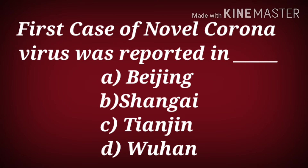The first case of novel coronavirus was reported in — was it in Beijing, Shanghai, Tianjin, or Wuhan? The correct answer is Wuhan, China.